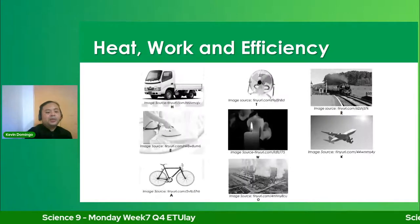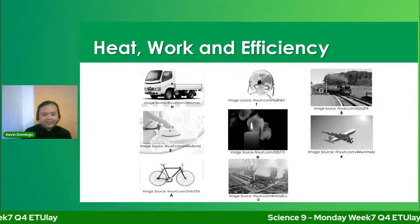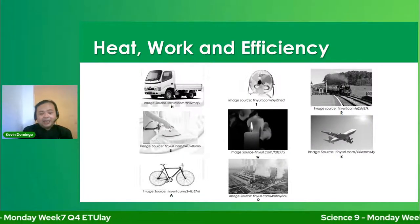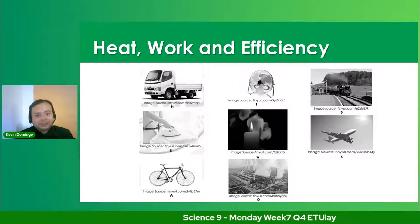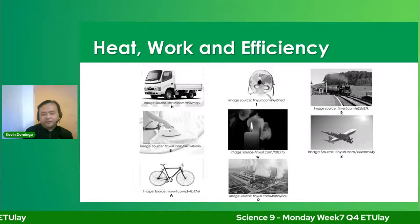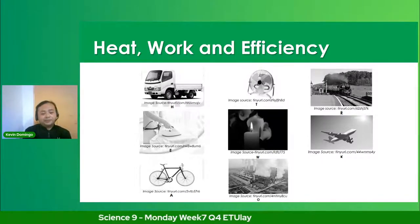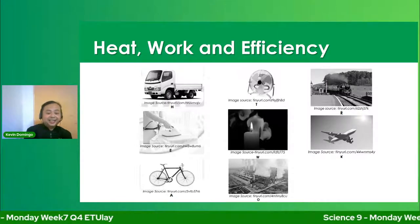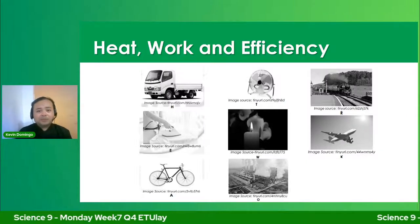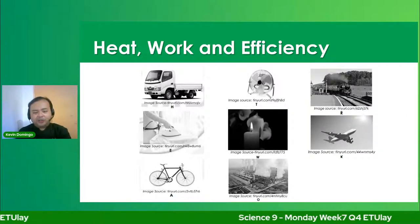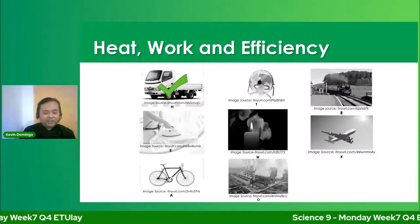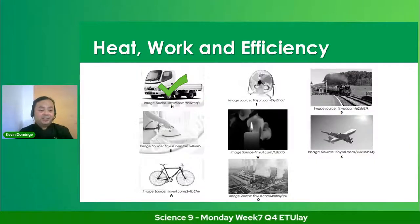I have here different pictures — let us identify which of these objects use a heat engine. First, a truck. Is it using a heat engine? Well, of course, it's a vehicle. To run, it needs an engine. The answer is check — yes, a heat engine is applicable because it has an engine. Next, a flat iron. Is this object using a heat engine? No. It does not. It has no motor or engine.